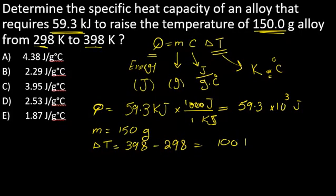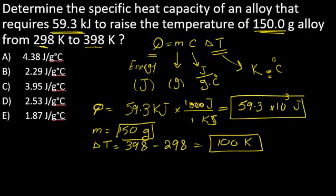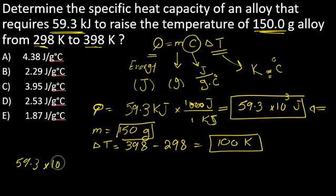Let's plug these numbers in the equation to find C, which is the specific heat. So Q, which is 59.3 times 10 to the power of 3, equals m, which is 150, times C, which is my unknown and what I'm looking for, times delta T, which is 100.